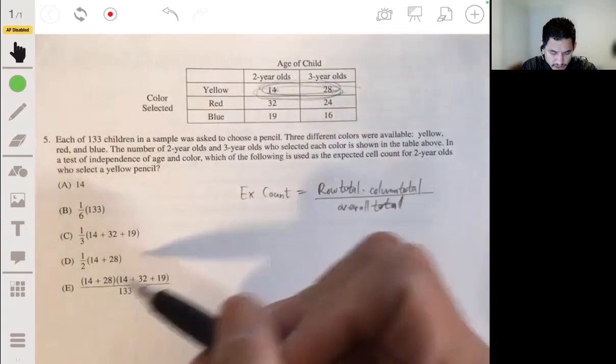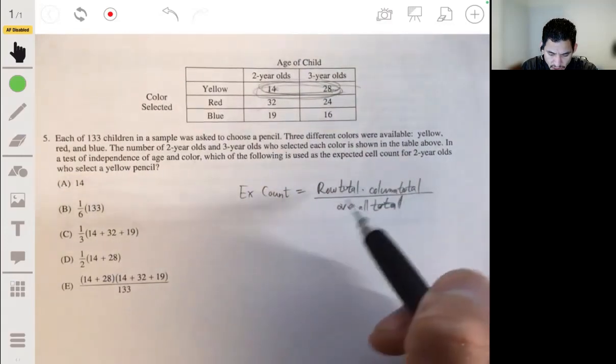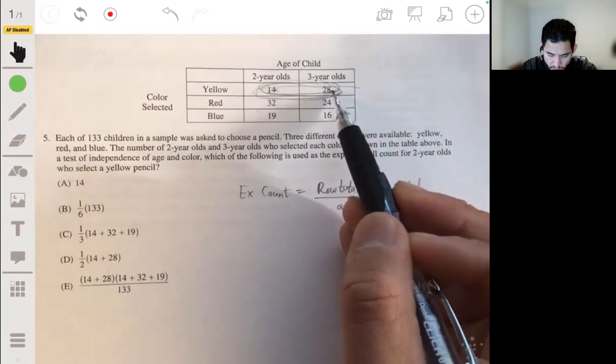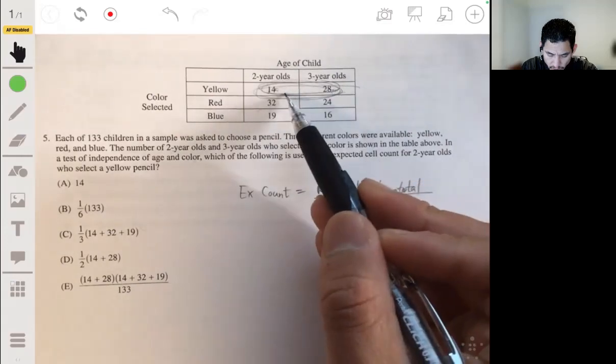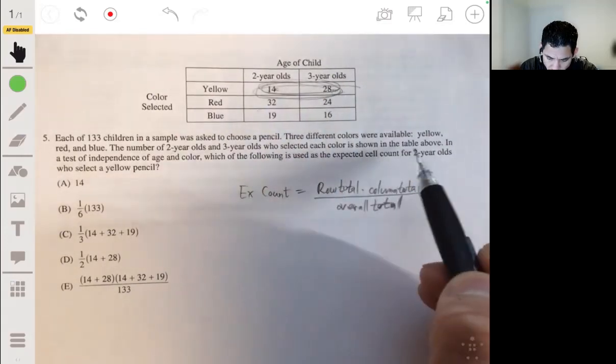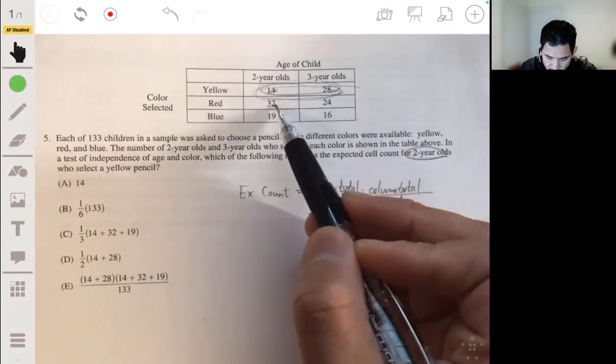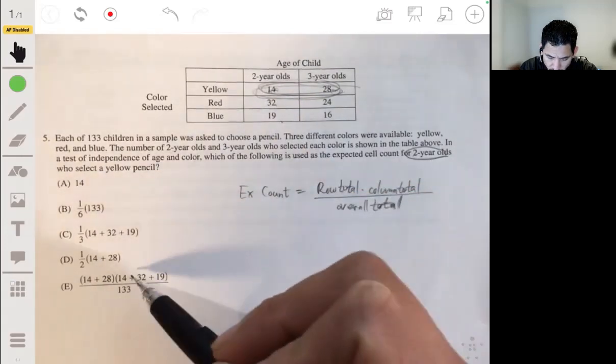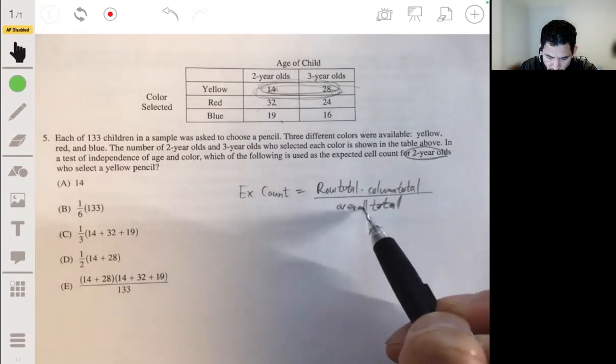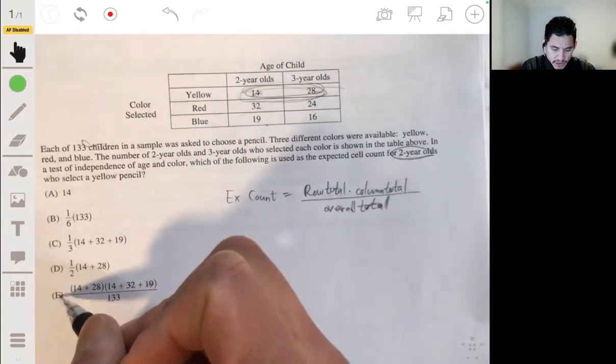So row total, that's the 14 plus 28. Column total, we're looking at two-year-olds, so we're going to do the 14, 32, and 19. And overall total, the 133. So the answer will be E.